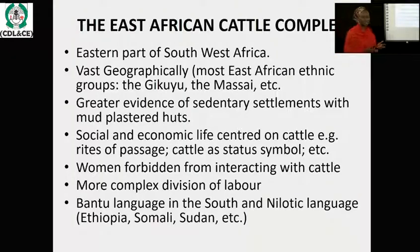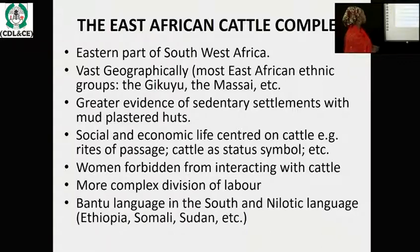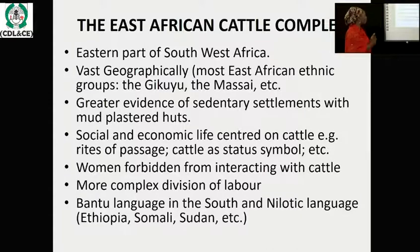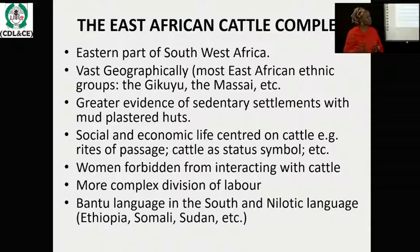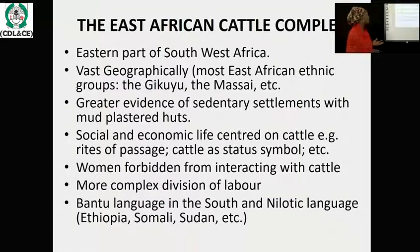They are sedentary people who deal with cattle — they domesticate animals. Their social and economic life is centered on cattle, which is very important to the Maasai and Kikuyu. Women are forbidden from interacting with cattle, which is the opposite of the Hottentot area where women were allowed.